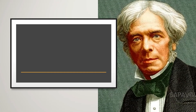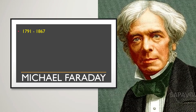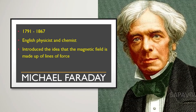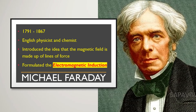The next scientist is Michael Faraday, who was born in the year 1791 and died in the year 1867. He was an English physicist and chemist who introduced the idea that magnetic field is made up of planes and poles. In relation to the electromagnetic wave theory, he was the one who formulated the principle behind electromagnetic induction — generating electricity by means of a changing magnetic field.